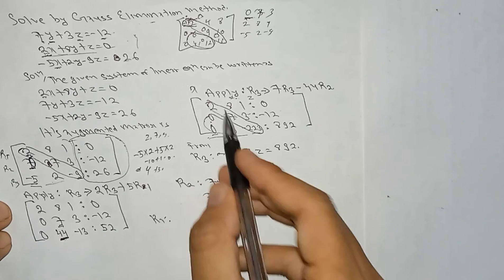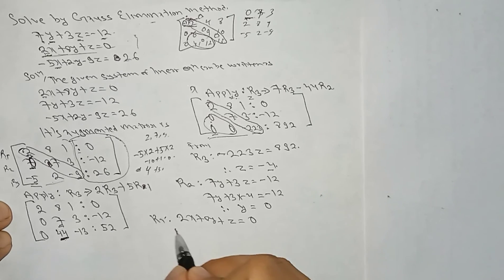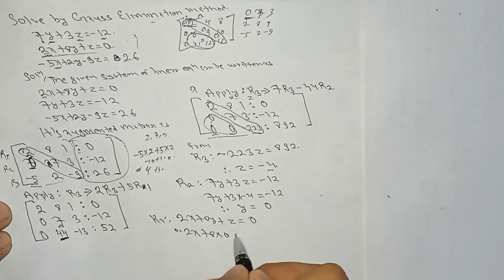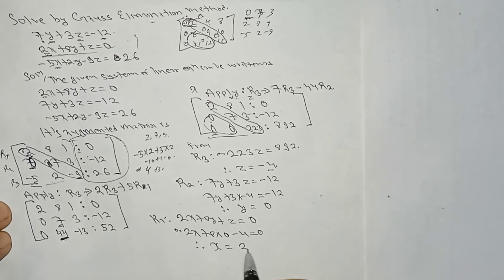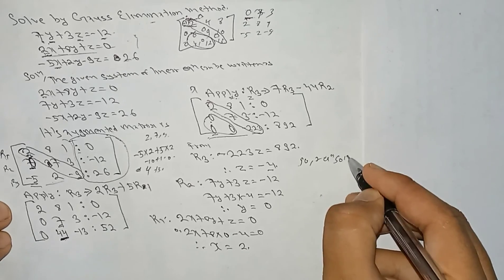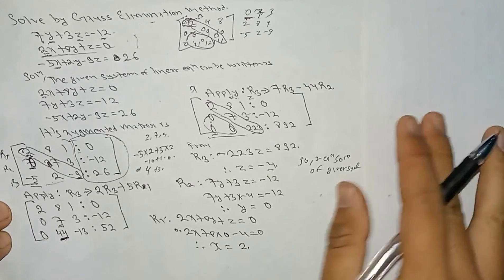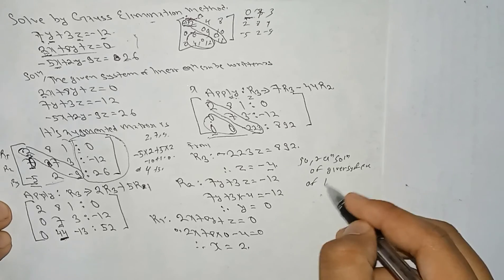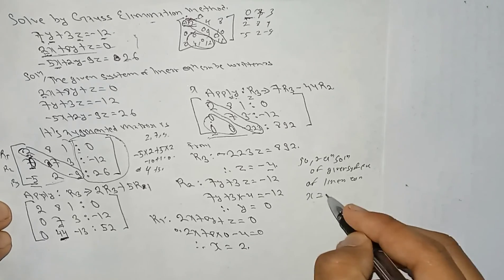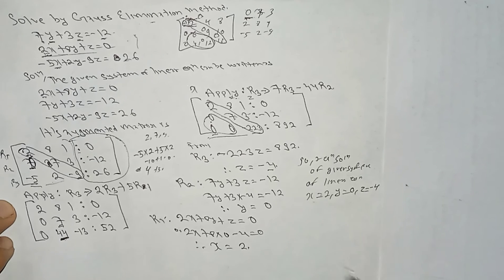From R1: 2x plus 8y plus z equals 0. Substituting y equals 0 and z equals minus 4: 2x plus 8 times 0 plus minus 4 equals 0. We get the value of x equals 2. So the required solution of the given system of linear equations is: x equals 2, y equals 0, z equals minus 4. In this way, we can get the solution by Gauss elimination method.